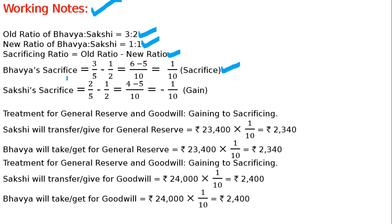Sakhi's sacrifice: 2/5 minus 1/2. LCM is 10, so that is 4/10 minus 5/10, which equals minus 1/10. Where the result is negative, that is a gain. So Sakhi has gained. The one who gains — their capital account will be debited, because the amount will be transferred from their capital account to the sacrificing partner's capital account.